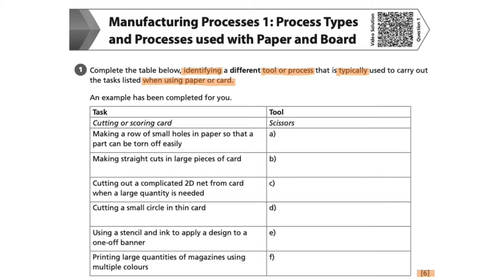If the tool or process you identify is not typical of use with paper or card, then no marks will be awarded. Using my knowledge of paper and card products, I'm trying to recall an item or product where this task would have been completed. For ticket stubs and raffle tickets, you may well need a row of small holes in the paper so that somebody can tear off one part of it. The next task is how we would make straight cuts in large pieces of card.